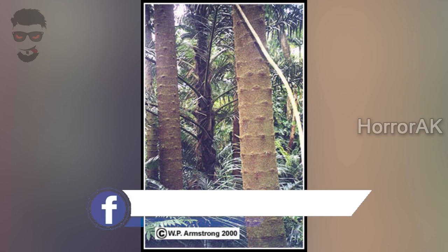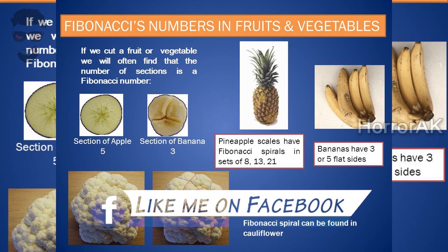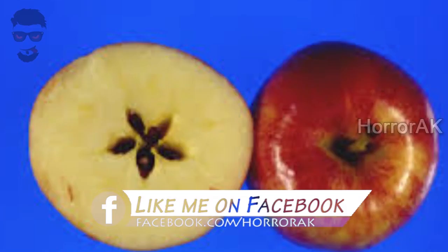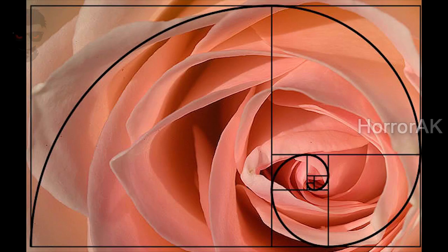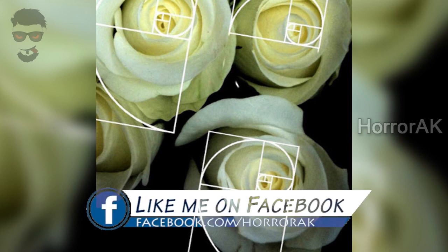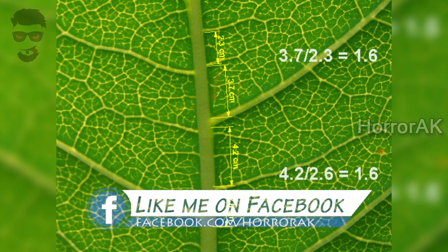Coniferous trees are also based on the Fibonacci numbers. This is a small detail in this series. There is also a Fibonacci sequence: banana — 3 sections; apple — 5 sections. 3 and 5 are Fibonacci numbers. Many of these numbers are based on the Fibonacci pattern. But the rose is the best example — rose petals spread the pattern clearly.